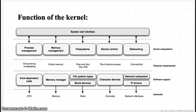The last is the networking. Networking must be managed by the operating system because most network operations are not specific to a process. Incoming packets are asynchronous events. The packets must be collected, identified, and dispatched before a process takes care of them. The system is in charge of delivering data packets across programs and network interfaces, and it must control the execution of programs according to their network activity. Additionally, all the routing and address resolution issues are implemented within the kernel.